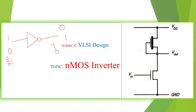This is only the symbol for the inverter. But if you want to design a circuit — the internal circuit — a minimum of 2 transistors are required to design an inverter. So this is an NMOS inverter.